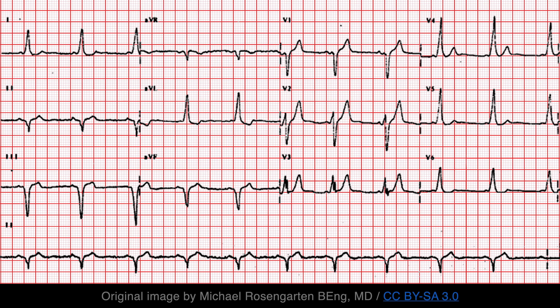Let's review the common findings of Wolff-Parkinson-White syndrome: a short PR interval, the delta wave, and QRS prolongation.